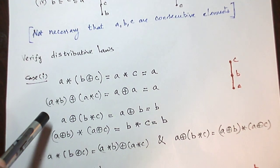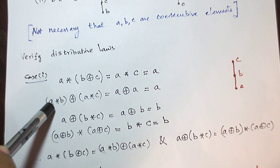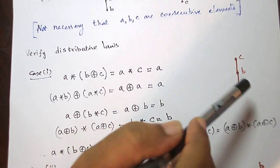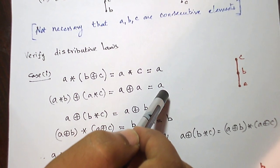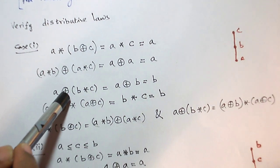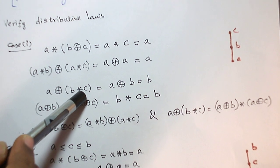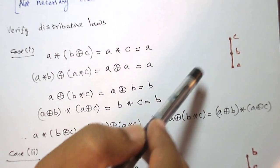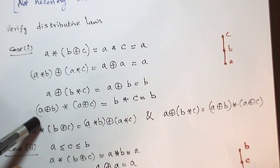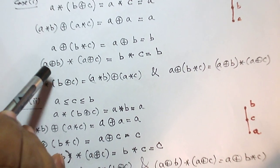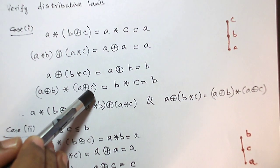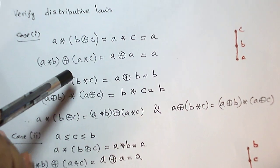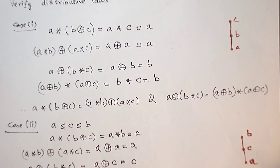The right-hand side of the distributive law is (A∧B)∨(A∧C). A∧B — the smaller among A and B — is A. A∧C — the smaller among A and C — is A. So A∨A by idempotent law is A. Similarly for the other distributive law A∨(B∧C): B∧C is B, so A∨B is B. The right-hand side (A∨B)∧(A∨C) gives B∧C = B. Left side and right side are equal, so the distributive law holds for the first case.